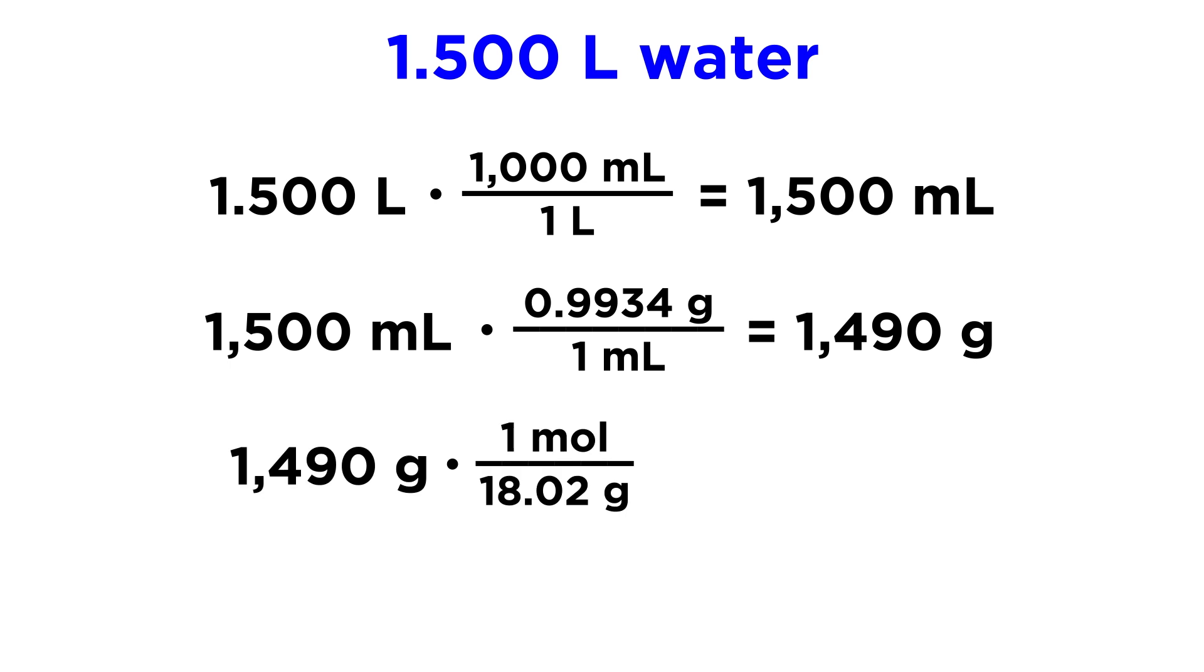Then we take our 1490 grams of water and multiply by one mole over 18.02 grams—that's the molar mass of water. And we know we therefore have 82.69 moles of water. That's how many moles of water are in this volume of water at this temperature.